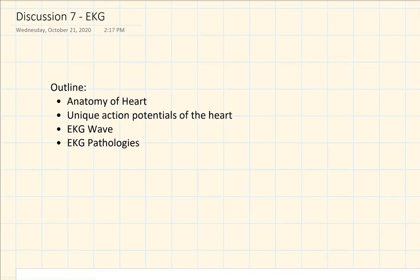I'll start with an outline of what we'll be going over in these videos. First, I'm going to cover the anatomy of the heart, including the electrical structures and the autorhythmic cells. Then we'll talk about the two unique action potentials in the heart. I'll introduce what a normal EKG wave looks like and everything EKG can tell us, then go through some EKG pathologies before getting to the actual worksheet at the end.